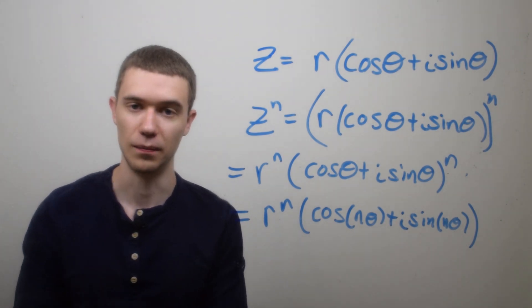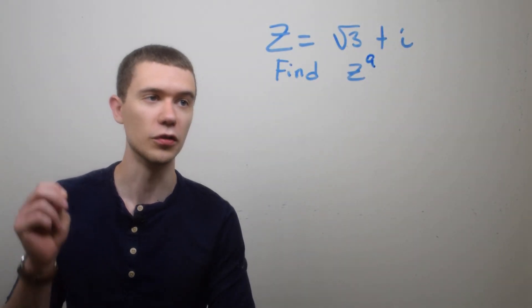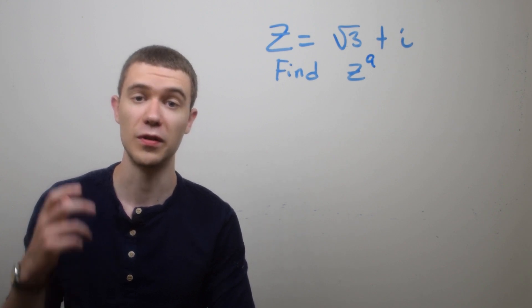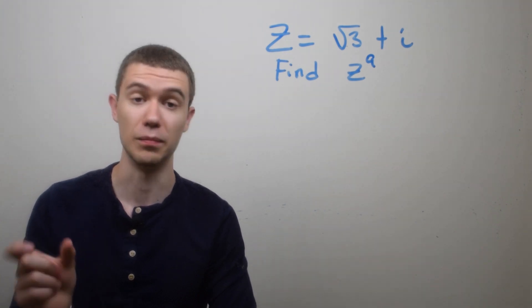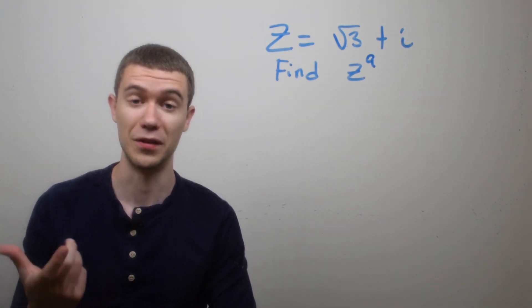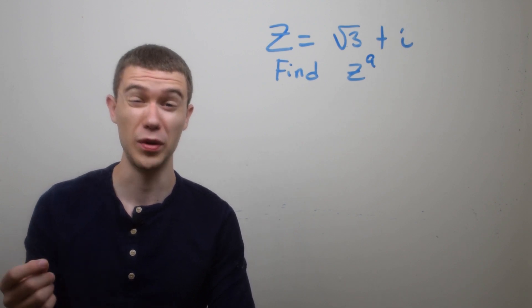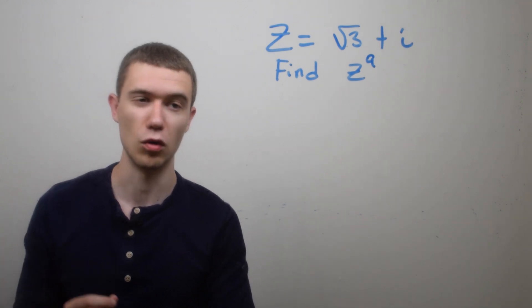So here I have the complex number z equals √3 + i, and I want to find this complex number to the ninth power. Now you could take this number and just multiply it by itself nine times, like doing FOIL, the distributive law, but that would be a real pain. So instead we're going to use the formula I just introduced and show you the real power of de Moivre's formula.